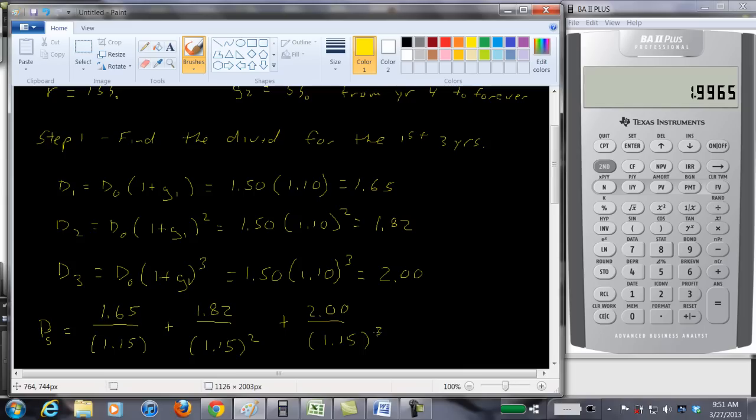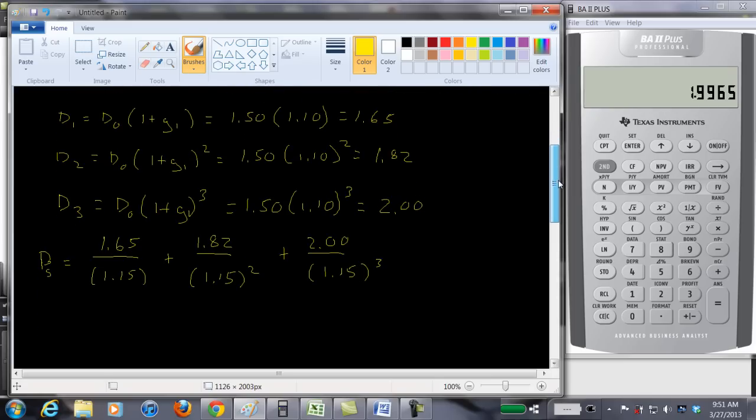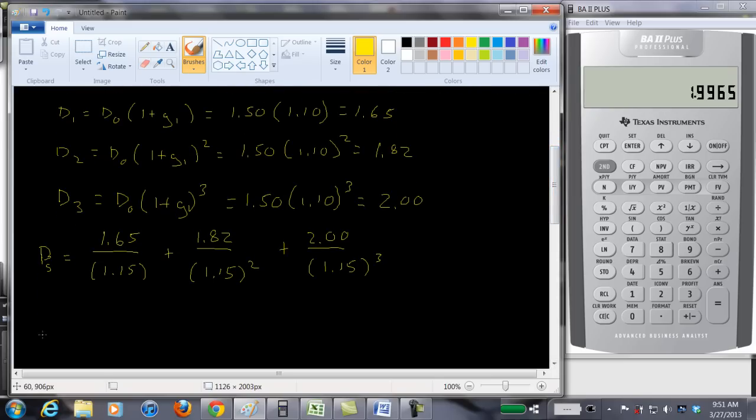But we're not done yet. What we need is we need to then figure out what are the rest of the dividends worth? What are the dividends from year four going forward worth? Now we can apply the constant growth dividend formula. So we can figure out the price of the stock in year three by taking the dividend in year four and dividing it by R minus the constant growth rate which is going to be G2.